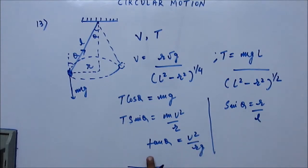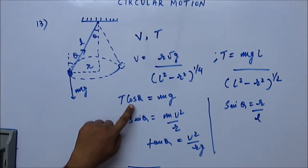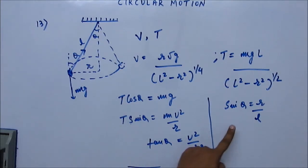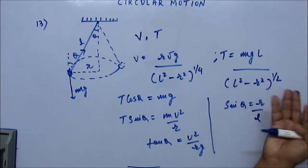So sin theta we know, tan theta we know, so velocity can be easily found out. Similarly, from this equation tension you can easily find out. Put the value of cos theta because you know sin theta; from there you put cos theta and you'll find tension, and you will get the value of tension as this.